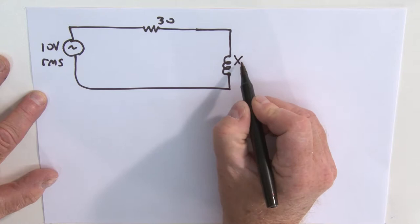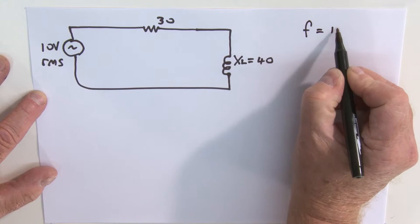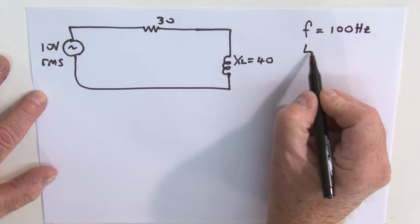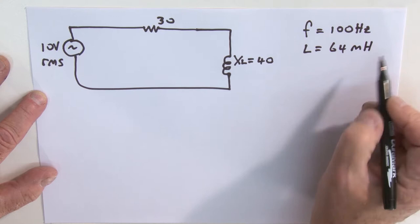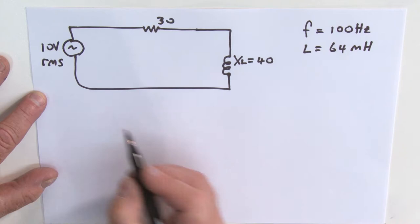The reactance of the inductor XL is equal to 40 ohms. Now, as a little exercise for you guys, the frequency has been set to 100 hertz, and the inductor is around 64 millihenrys. So perhaps you could use those numbers and verify my reactance here is 40 ohms.